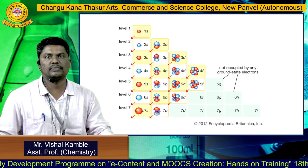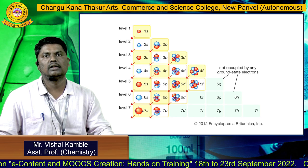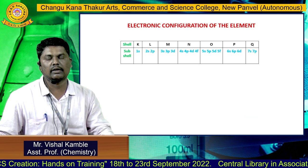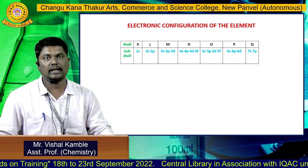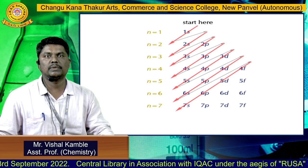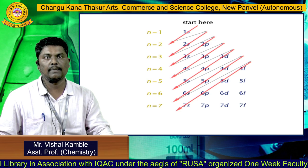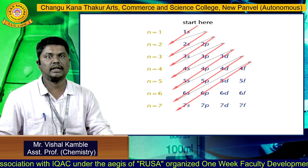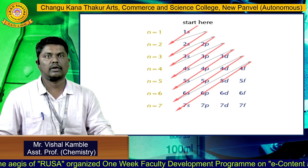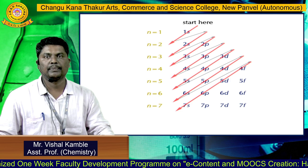This shows how electrons fill different orbitals according to the Aufbau principle. According to the Aufbau principle, level 1 fills first, then level 2, level 3, and so on up to level 7. The image clearly shows which subshell fills first: 1s, then 2s, 2p, 3s, 3p, 3d, 4s, 4p, 4d, 4f — and so on. Using this, we can write the electronic configuration of every element.